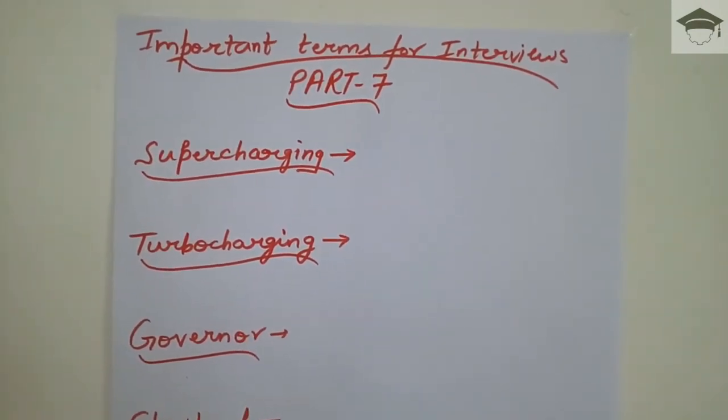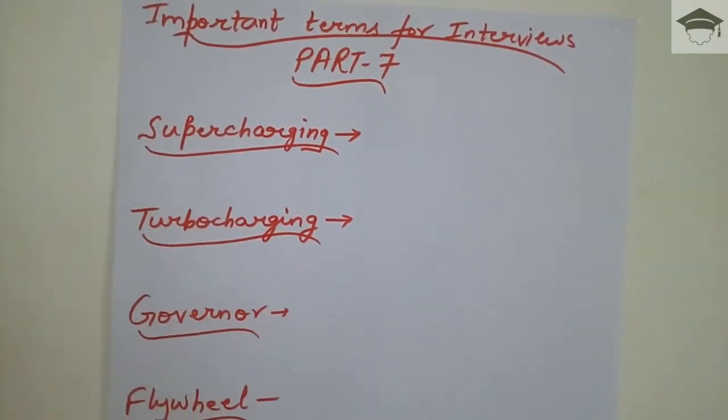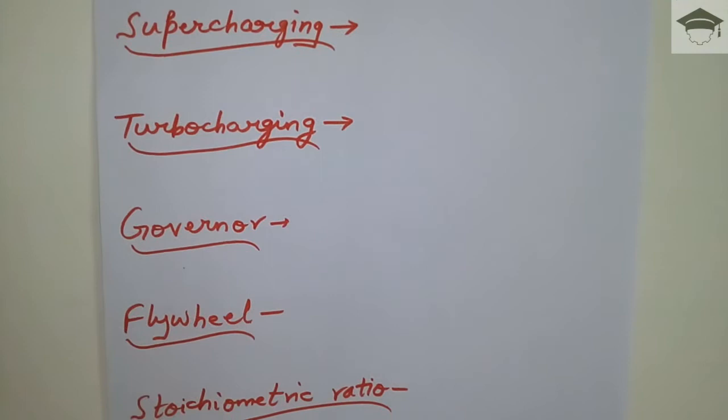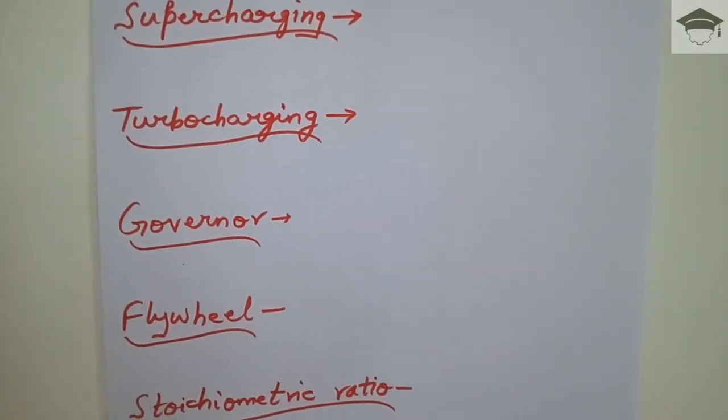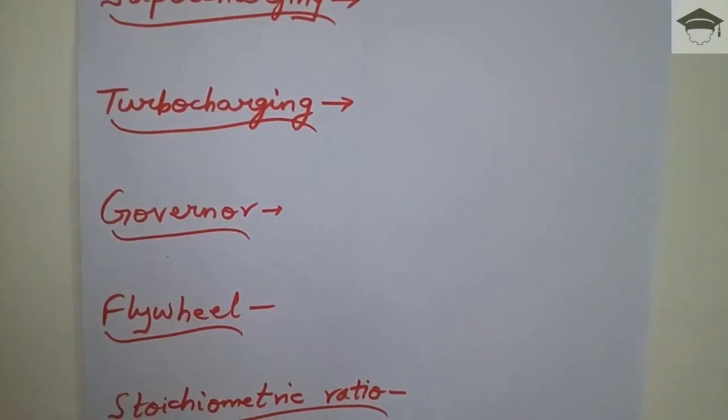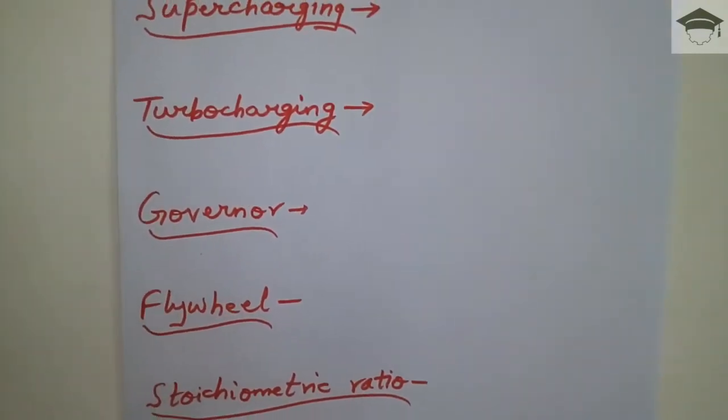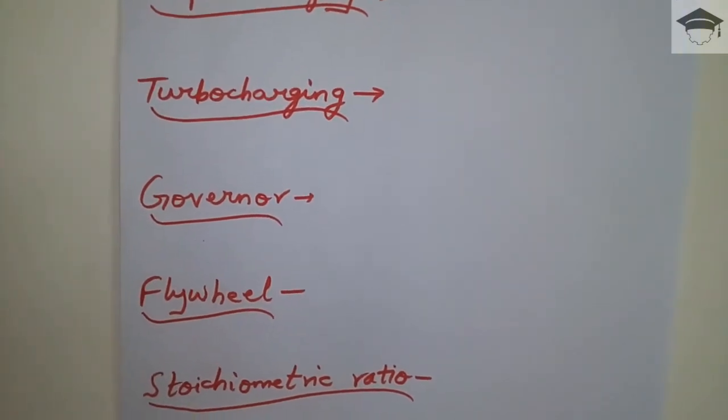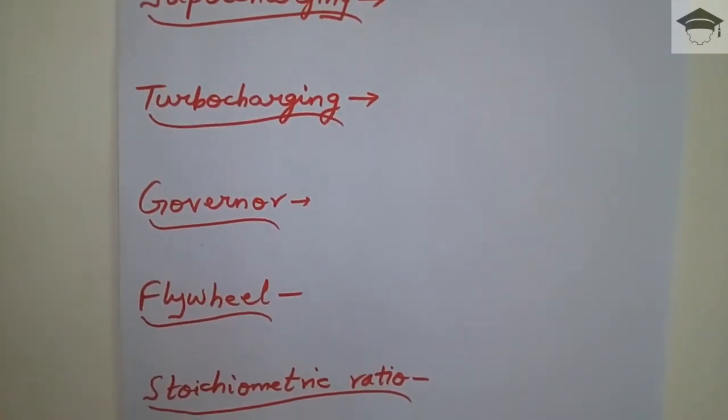Governor is a device used to control the mean speed of an engine. The governor takes care of variations in load and supplies the working fluid accordingly as the load changes.